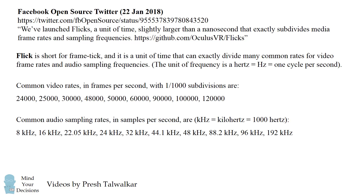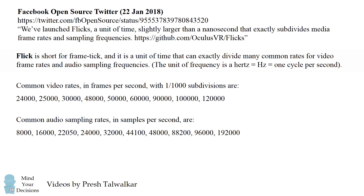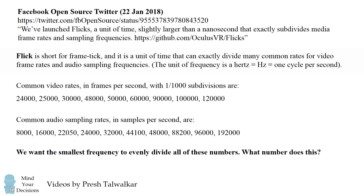To convert from kilohertz into Hertz, we multiply each of these numbers by 1,000. So we want the smallest frequency that will evenly divide all of these numbers, in order to sync frame rates of videos and audio sampling rates. What number would evenly divide all of these numbers?